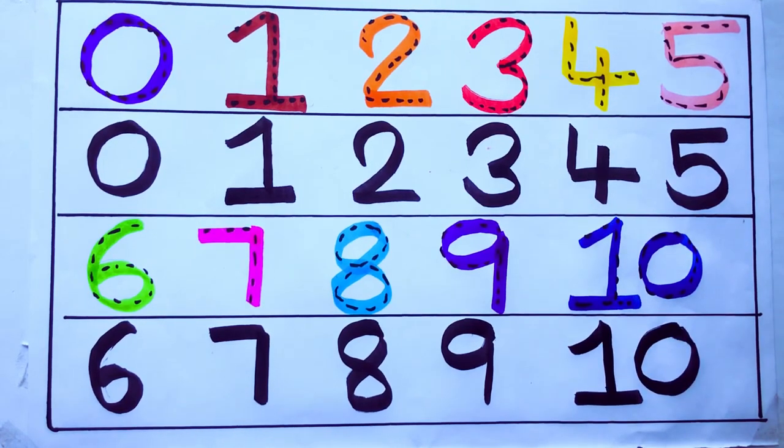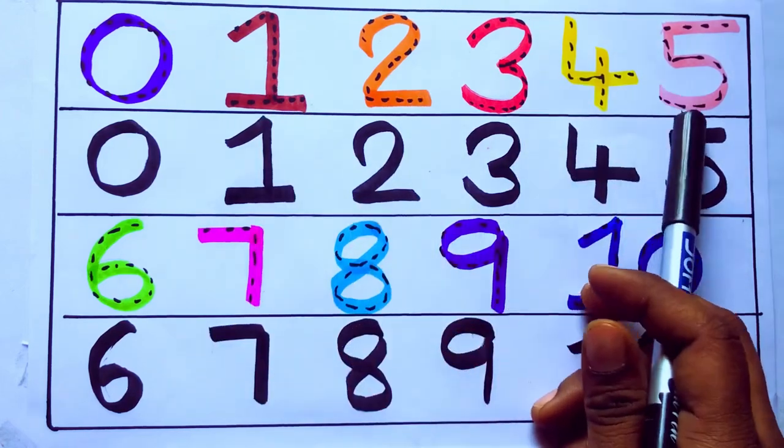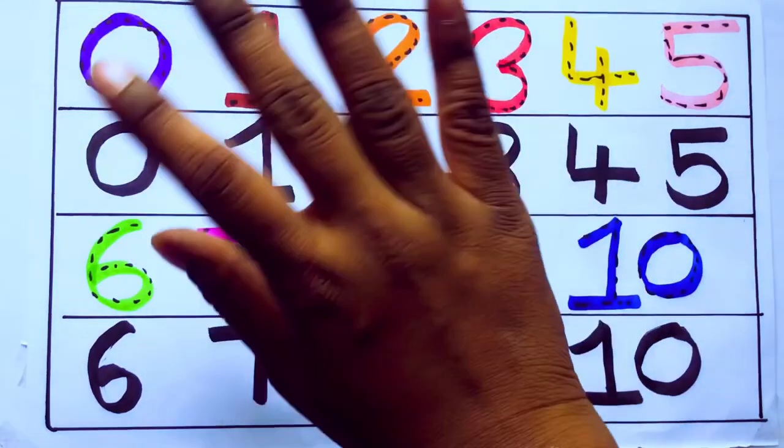Once again, learning numbers. 0, 1, 2, 3, 4, 5, 6, 7, 8, 9, 10. Okay. Bye kids.